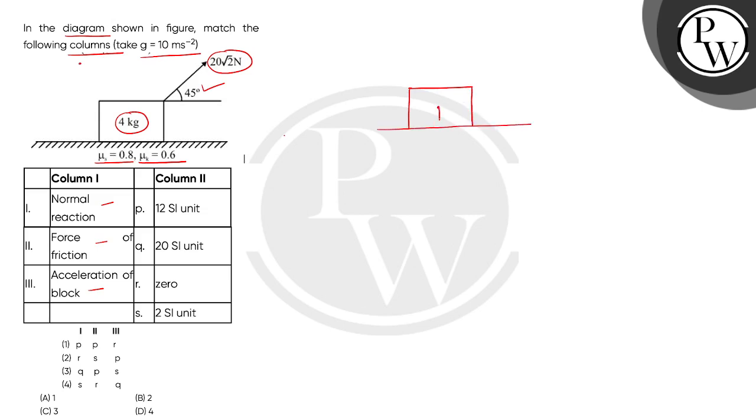Let this be the weight of the block, we'll call it 4g because it is mg. And this is the force, which is given as 20 root 2 newton and its angle with horizontal is 45 degrees.